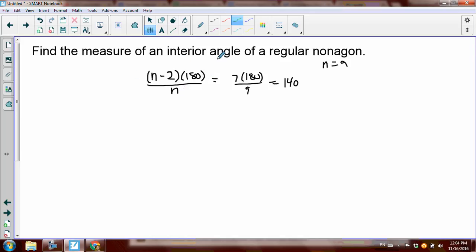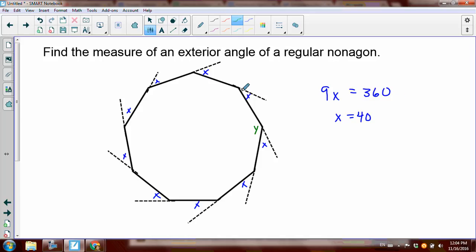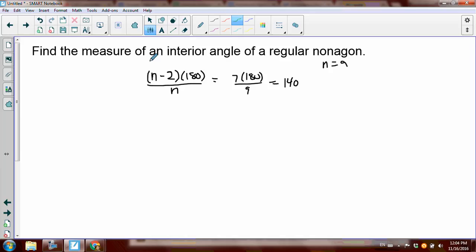If you want to find the measure of an interior angle of a regular polygon, you'll find the measure of an exterior angle first. Because that's just going to be 360 divided by however many vertices there are, however many exterior angles there are. And then subtract from 180 to get the interior angle. So this one on the right here is pointless.